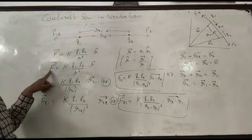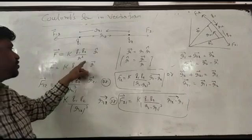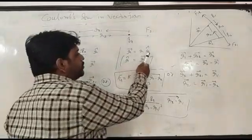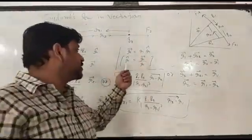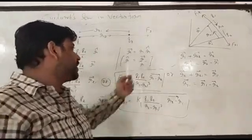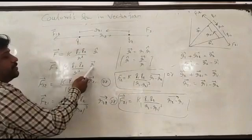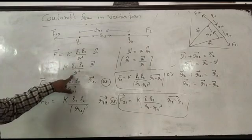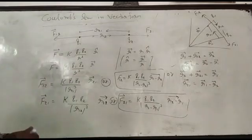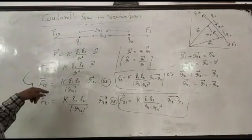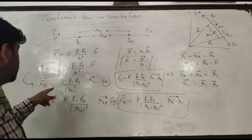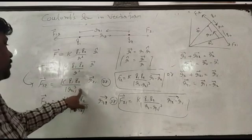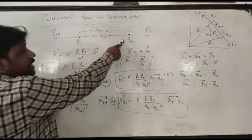Force in vector form is equal to k q1 q2 upon r cube times r cap. Vector r is equal to magnitude times direction. Vector r cap is equal to vector upon magnitude. That's why vector converted to r. We write the force on 1 due to 2, F12, is equal to k q1 q2 upon r21 cube times r21. Force on 1 due to 2, so take the distance from 2 to 1.